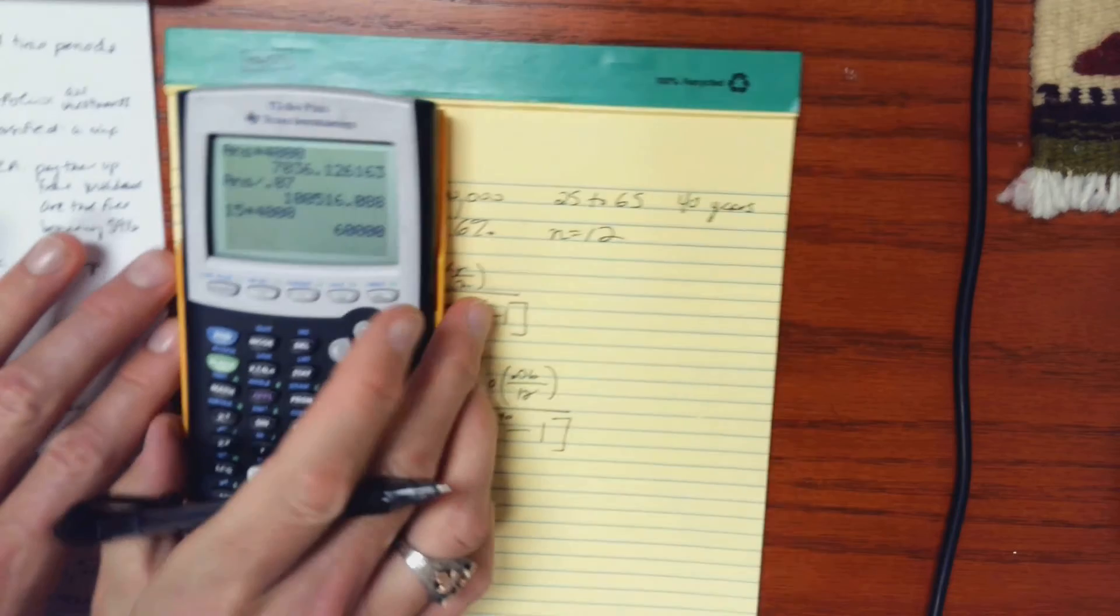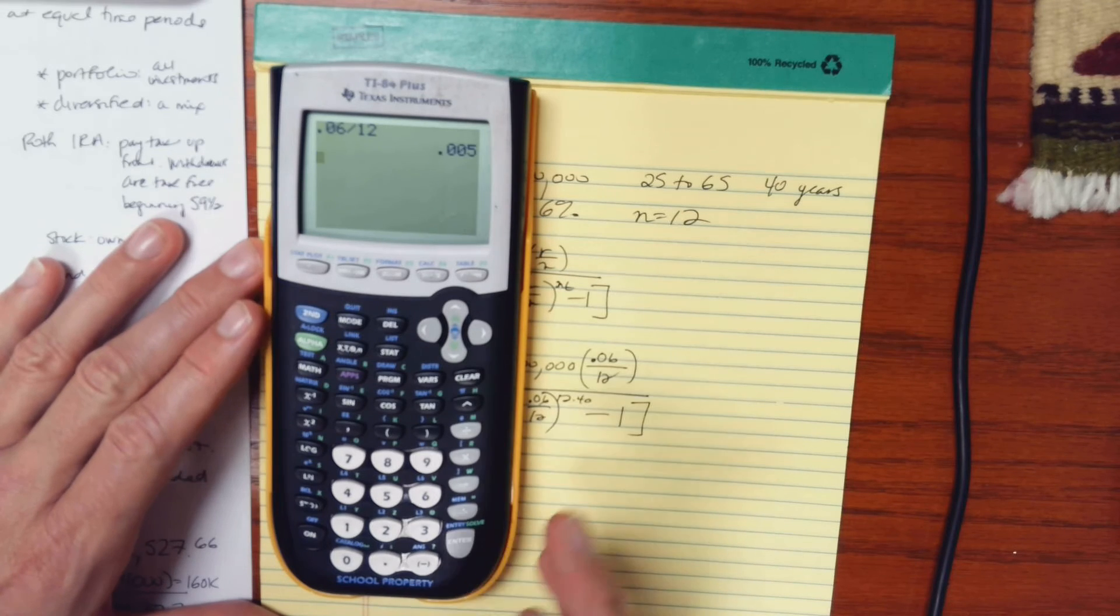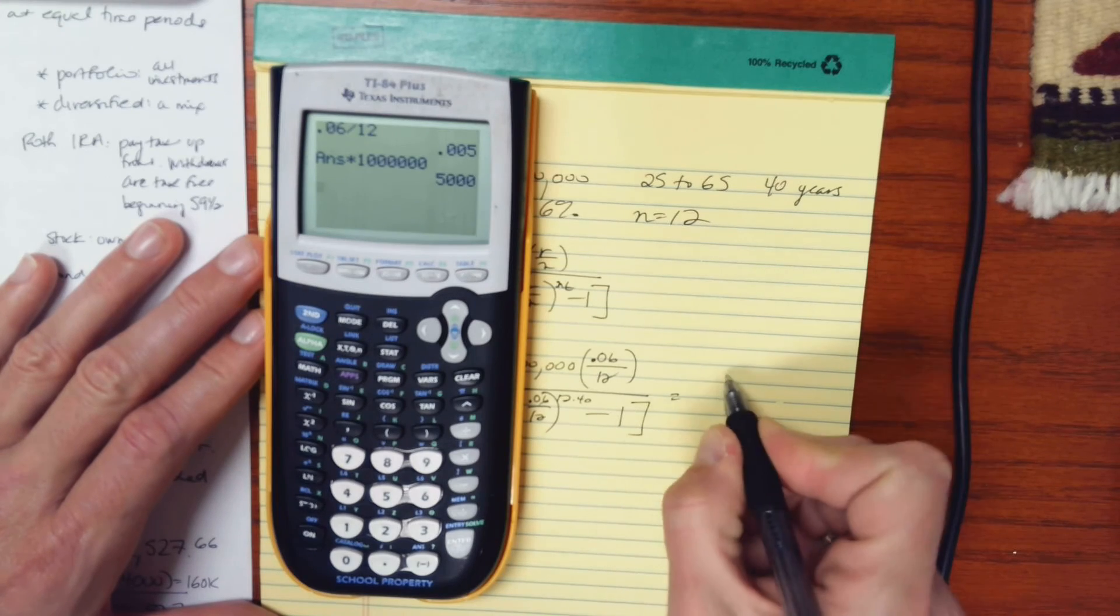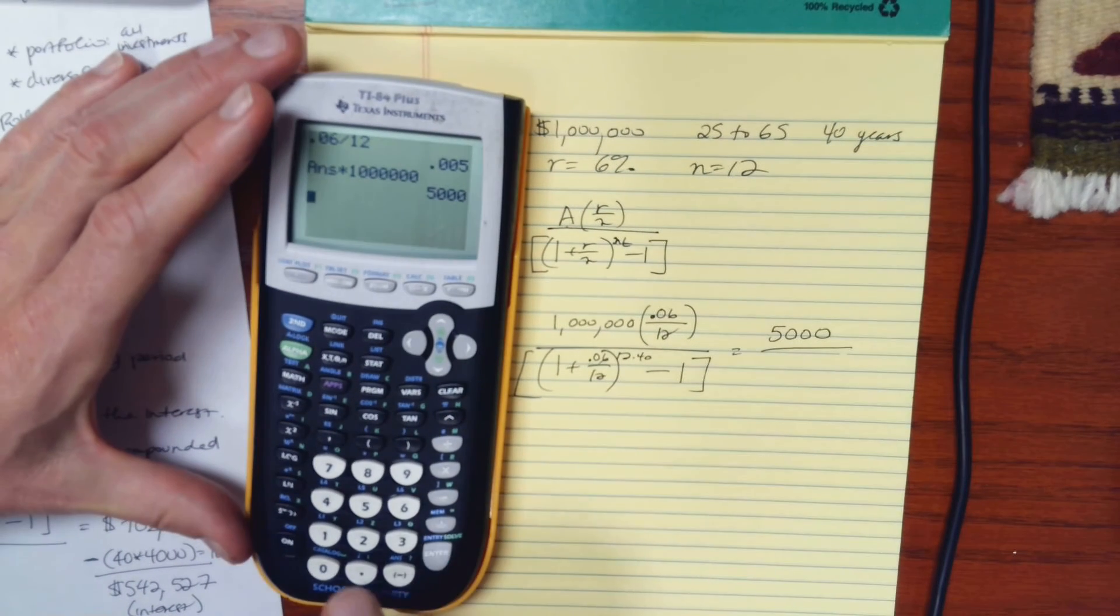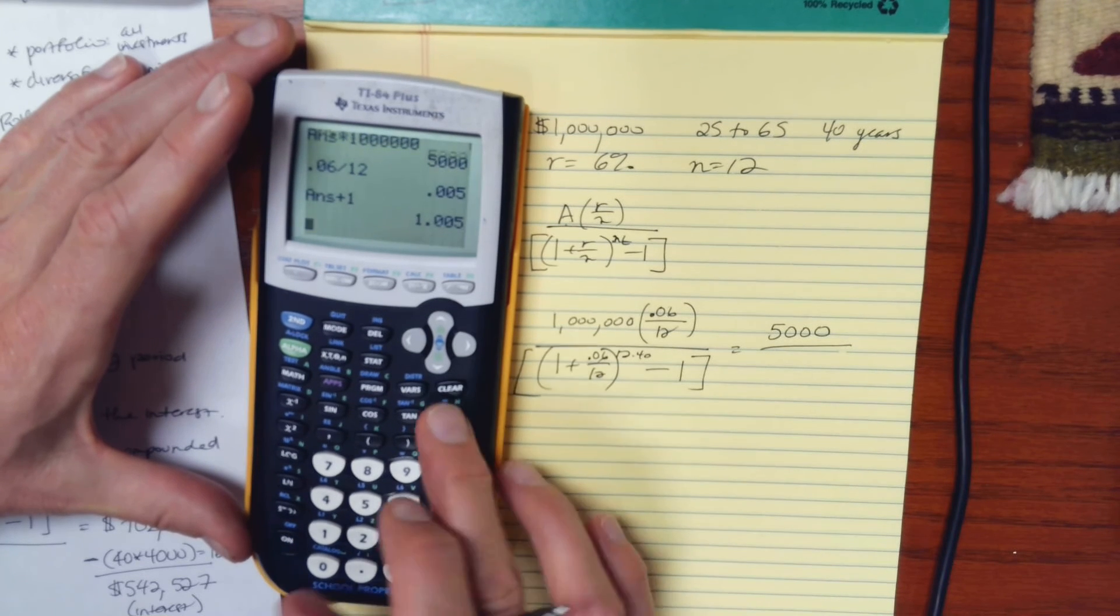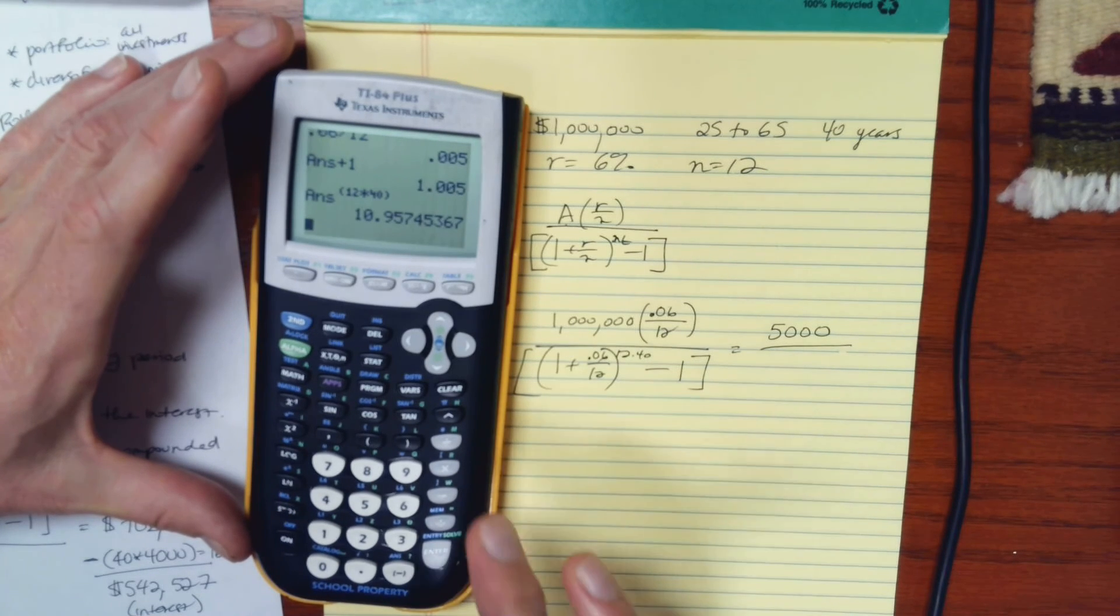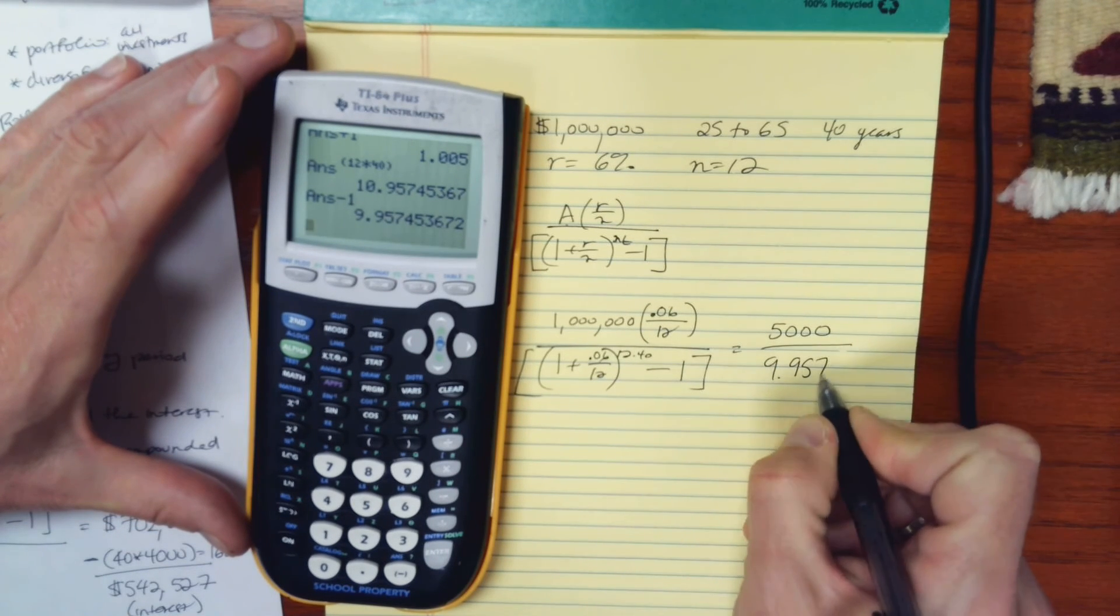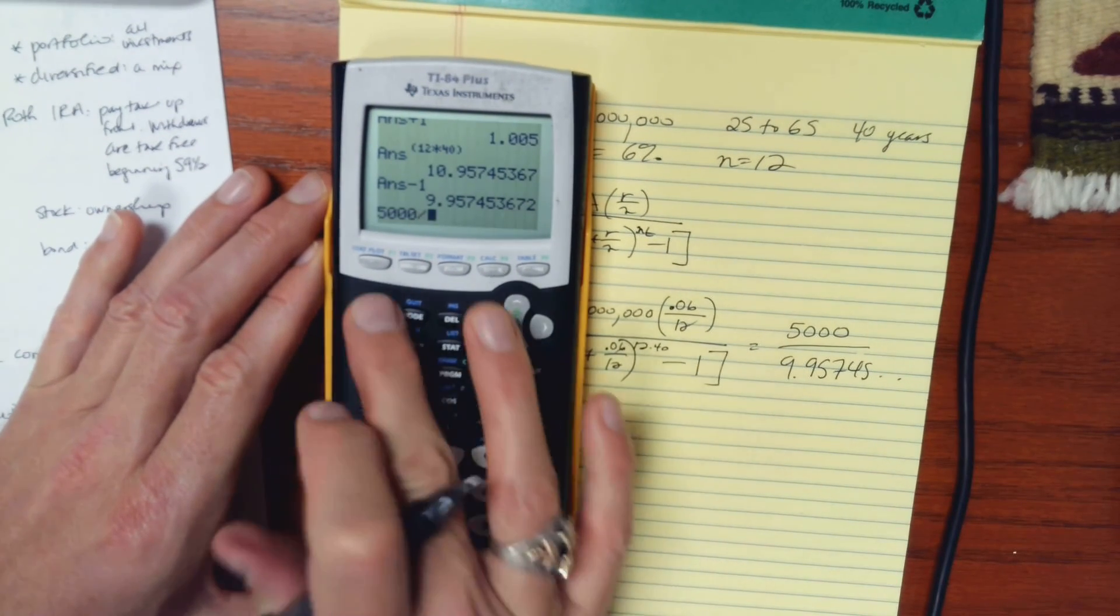So let's simplify this. I'll clear this out. 0.06 divided by 12 times my million. So this is 5,000. And then in the denominator, I have 0.06 divided by 12 plus 1 raised to the power of 12 times 40. And then subtract 1. And so this is 9.957. So I need to take 5,000 and divide it by that answer.